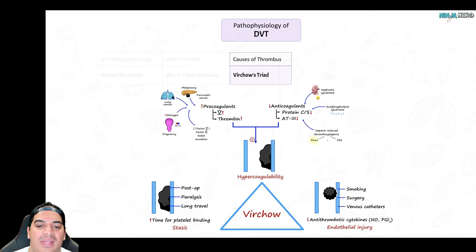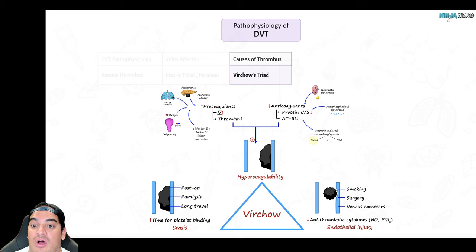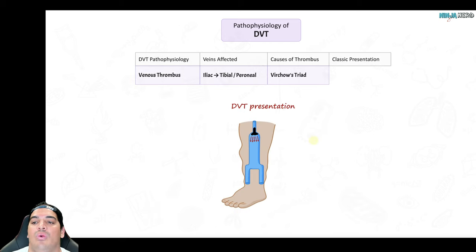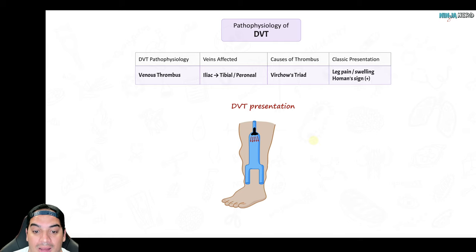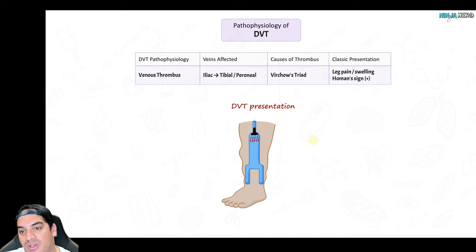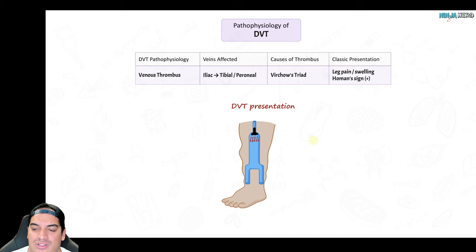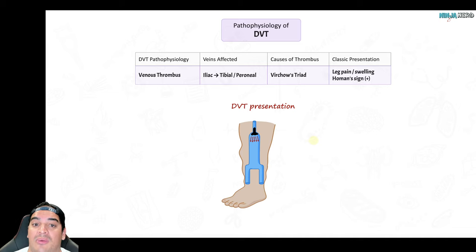Now we understand why patients form clots in proximal or distal veins causing DVTs. How do these patients present? A clot prevents venous flow, causing blood to back up, resulting in pain and swelling of the leg. A special test — having the patient dorsiflex — causes pain, called a positive Homan's sign. Be careful with this test though, as it can actually break the clot off and cause a PE.